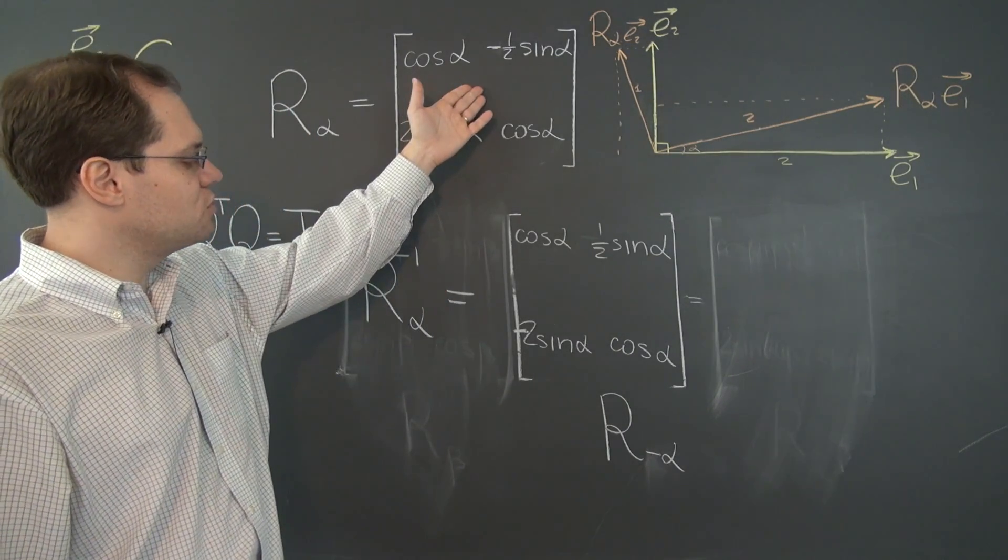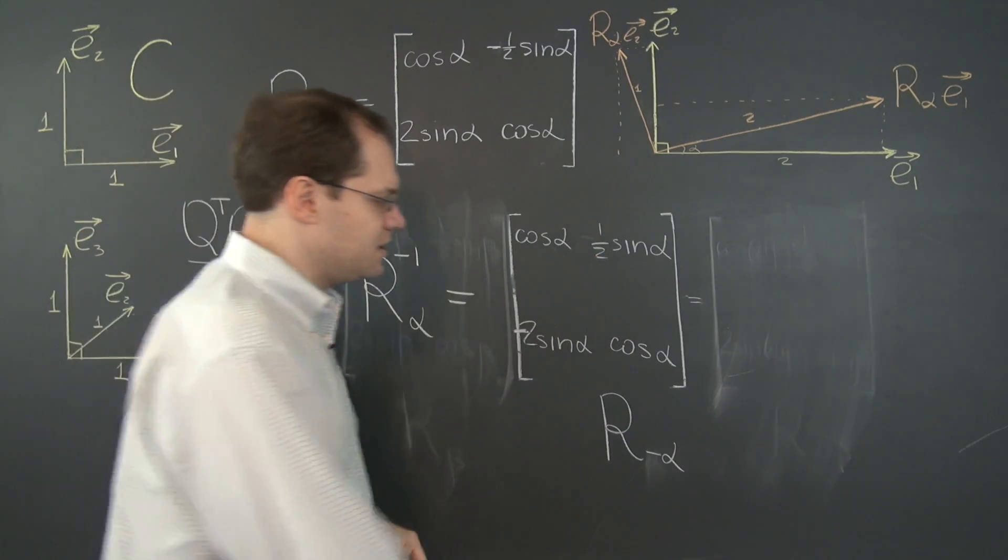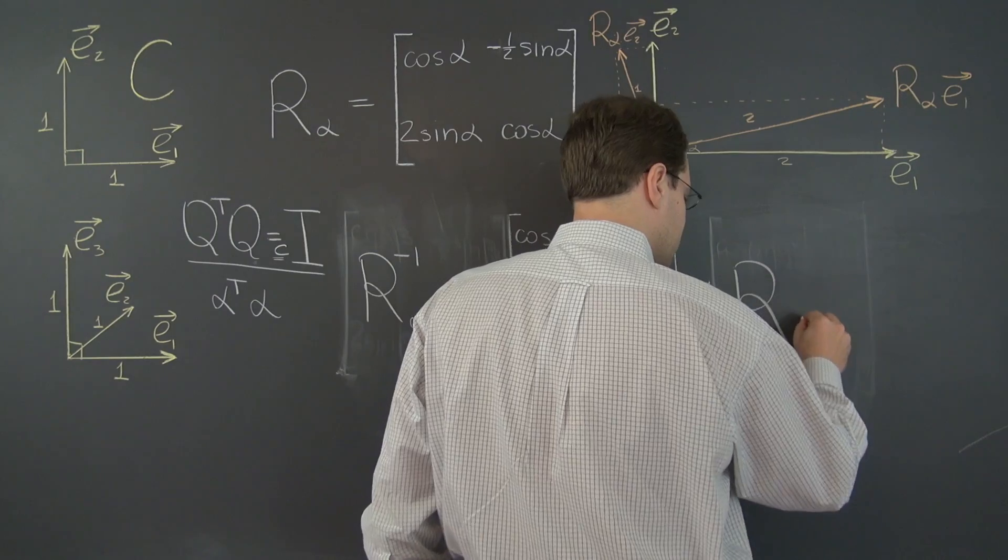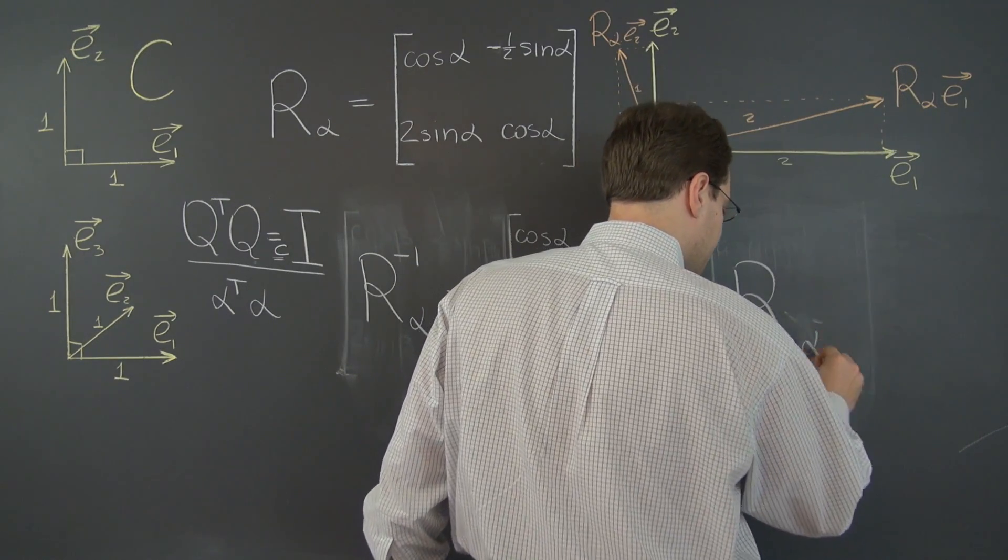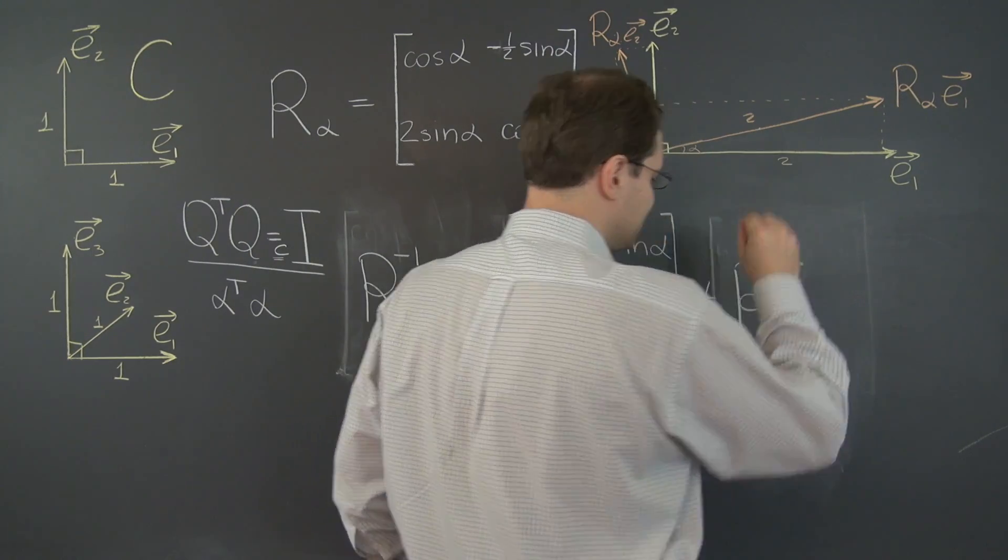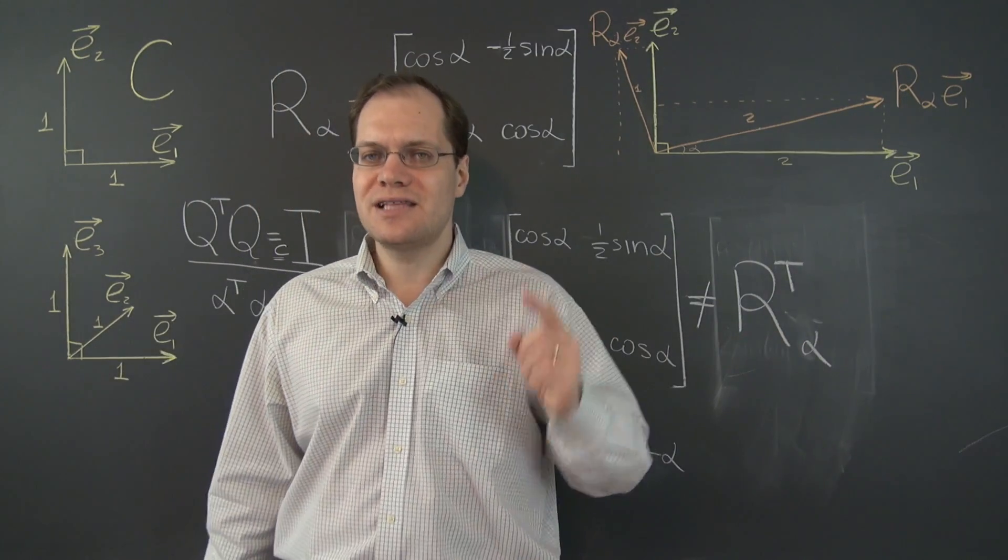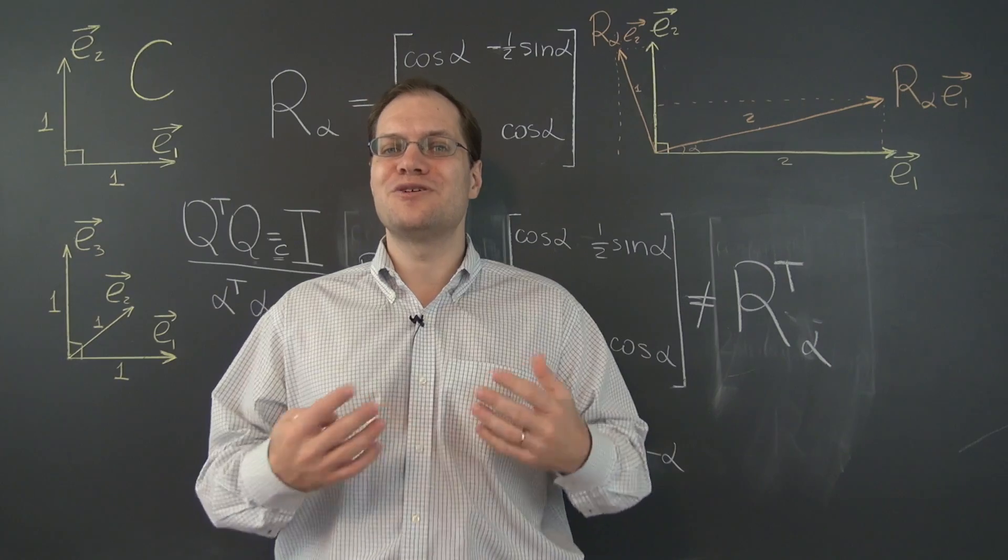For it to be a transpose of this one, the one half would have to be here and two would have to be here. So this is no longer the transpose, which is not surprising at all because that property hinged on the basis. No longer the transpose of the original matrix because that property hinged on the Cartesian property of the basis. So there we go.